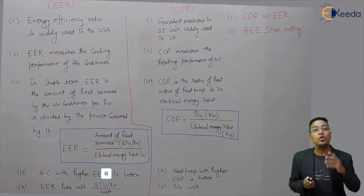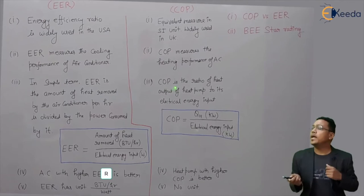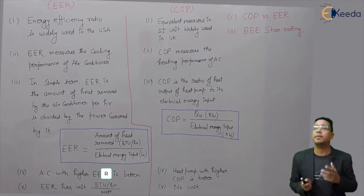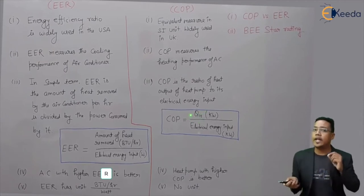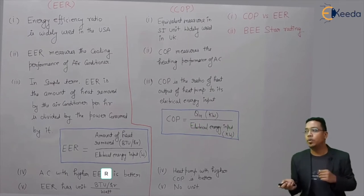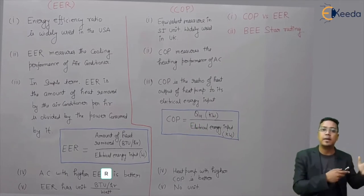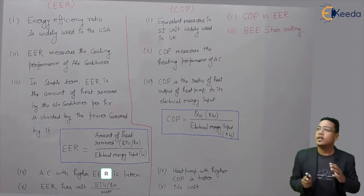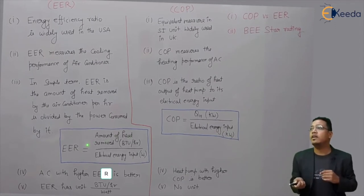If we talk about COP: COP is the ratio of the heat output of a heat pump to its electrical energy input. That means for a heating system or heat pump, the useful effect is QH, divided by the electrical energy input given to the heat pump. This is the difference between the definitions of EER and COP.